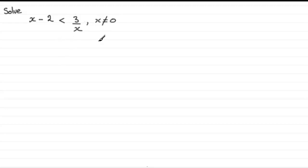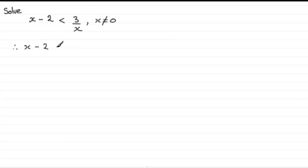So how do we solve this without drawing graphs? We don't remove the fraction at all in this method. What we do is subtract the fraction — in this case 3 over x — from both sides, so we get x minus 2 minus 3 over x is less than zero. Whatever we have, we just bring it across to one side and make it less than or greater than zero.